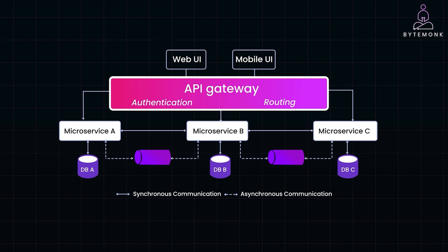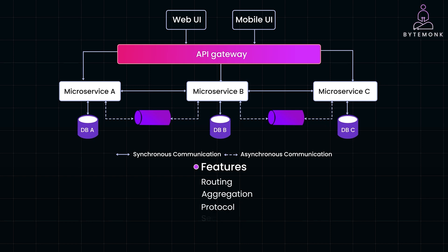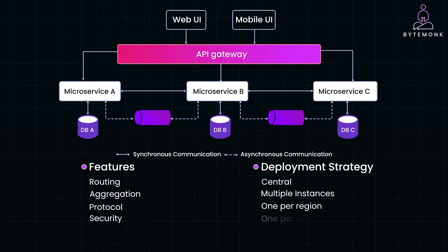Now that we understand the value of an API Gateway, let's talk about how to design and implement one. When designing an API Gateway, the first step is to define its responsibilities — you need to decide what tasks the gateway will handle, such as request routing, response aggregation, protocol translation, and security enforcement. Next, consider the deployment strategy: will your gateway be deployed centrally, or will you have multiple instances, perhaps one per region or per client type? This decision will impact the gateway's performance and scalability.